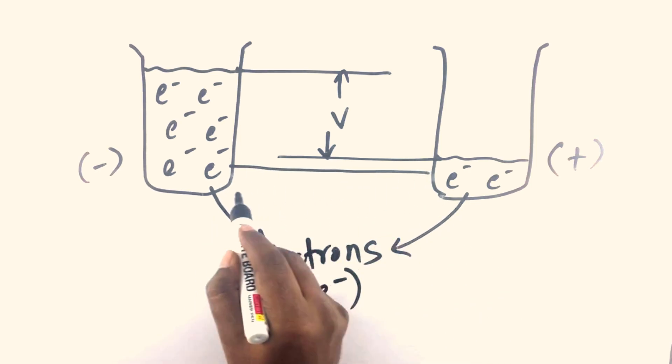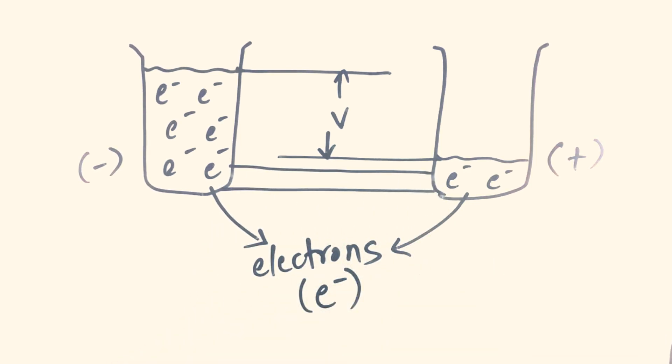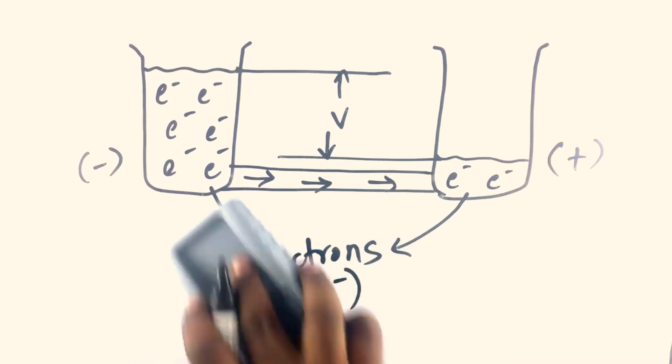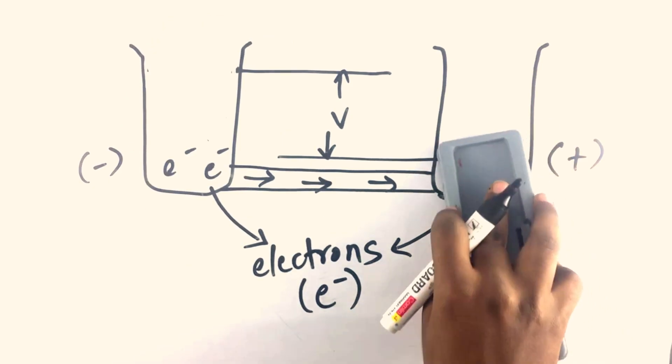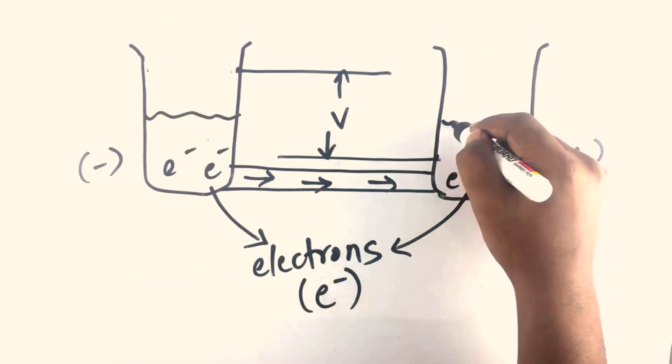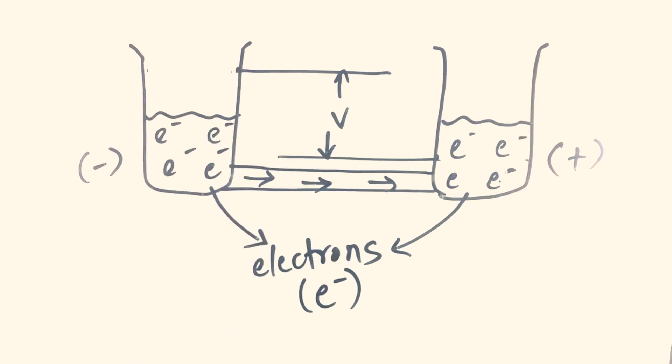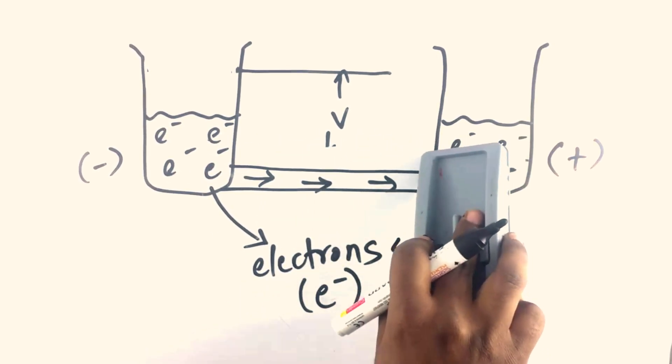If we connect these two tanks with a pipe which can be seen as a good conductor of electricity, the water will flow from the first tank to the second tank until there is no difference in height of the surface of the water. There is no voltage between these two sides.